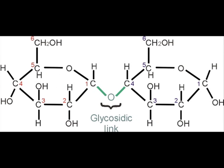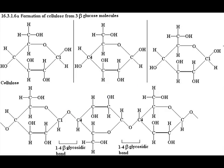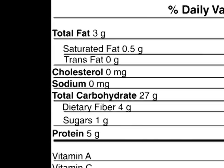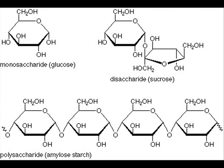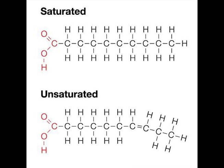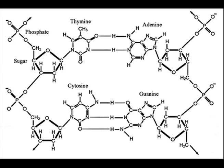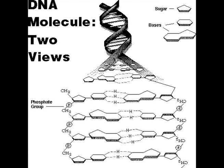Very large combinations of carbon molecules are called macromolecules. Their familiar names are listed on food labels. Carbohydrates, which store and transport energy. Fats and oils, which serve as reserve energy supplies. Proteins, which build and repair cell structures and organism tissues. Nucleic acids, which store information for the development, functioning, and reproduction of all organisms.